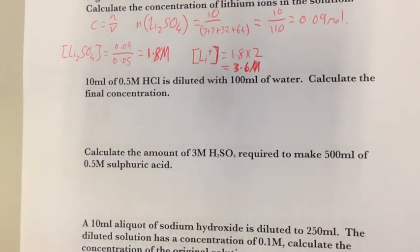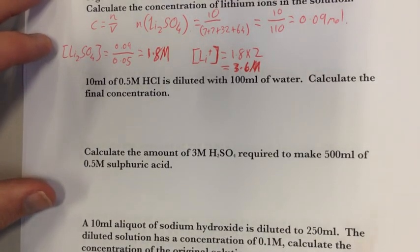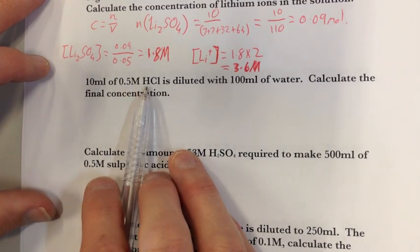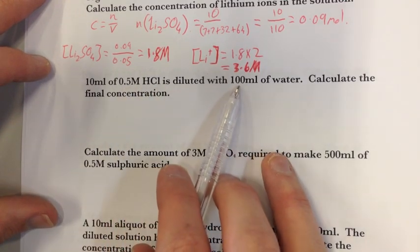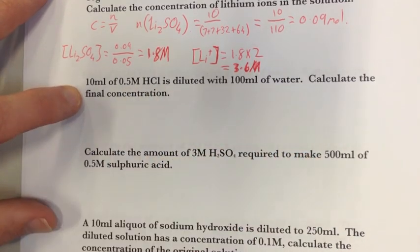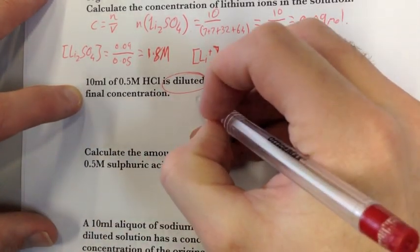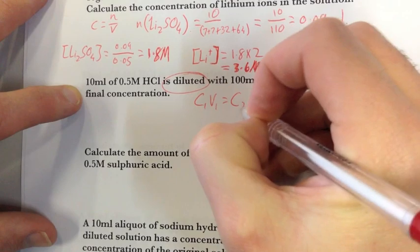So welcome. This is the questions that I'm going to deal with in terms of dilutions. As you can see, these are the same questions that are on the notes. We've got 10 mil of 0.5 molar hydrochloric acid is diluted with 100 mils of water. Calculate the final concentration. So obviously this word here, diluted, means C1V1 equals C2V2.